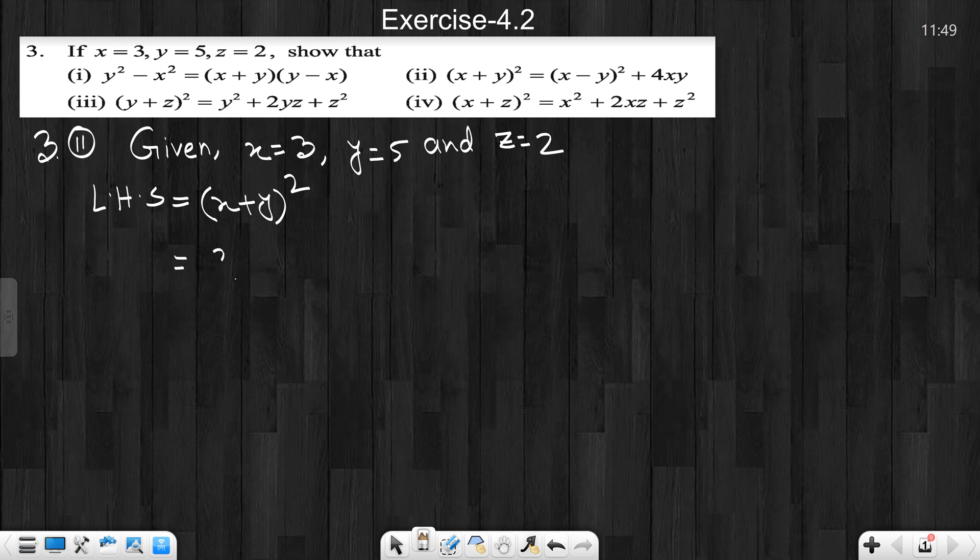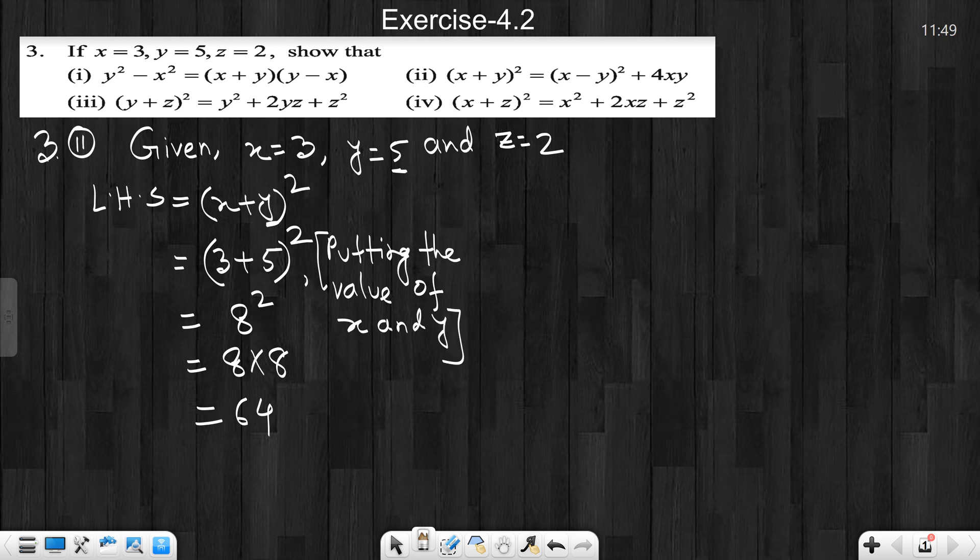So x equals 3 plus y, y equals 5. 3 plus 5 whole square. 3 plus 5 is 8. 8 whole square. 8 square means 8 multiplied by 8. So what is it? 8 multiplied by 8 is 64. We can do side note, putting the value of x and y. So left hand side is 64.